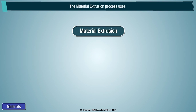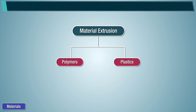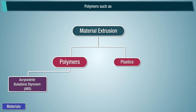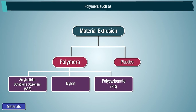The material extrusion process uses polymers and plastics such as acrylonitrile butadiene styrene (ABS), nylon, and polycarbonate (PC).